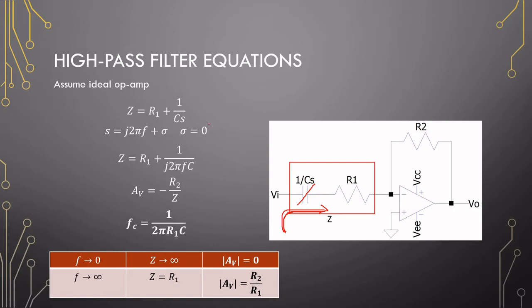This resistor and capacitor, let's call it impedance Z, and that's R1 plus 1 over CS, and the S of Laplace can just be replaced with J2πF. If we look at this term, if we take the frequency to 0 or close to 0, this term will become extremely large, much larger than R1.